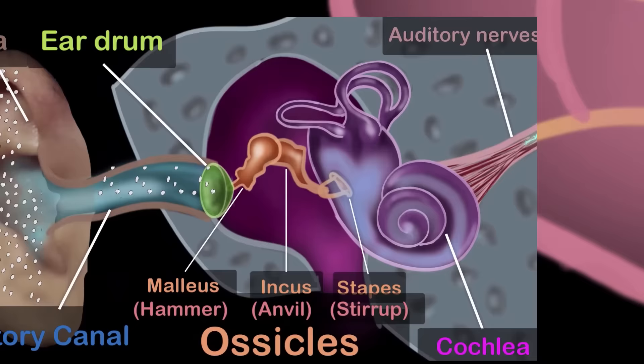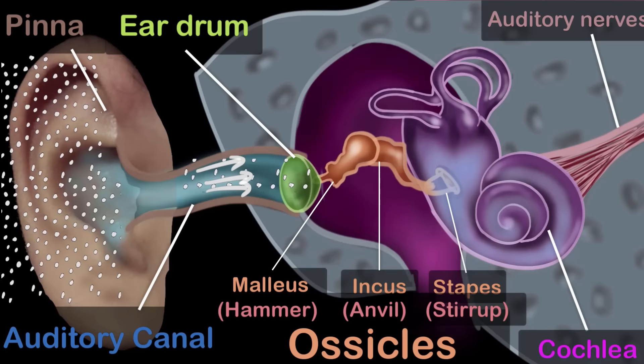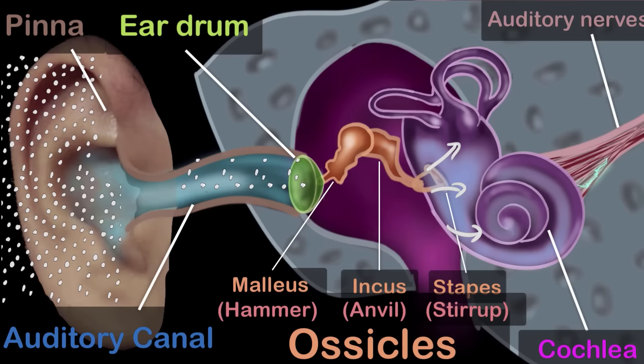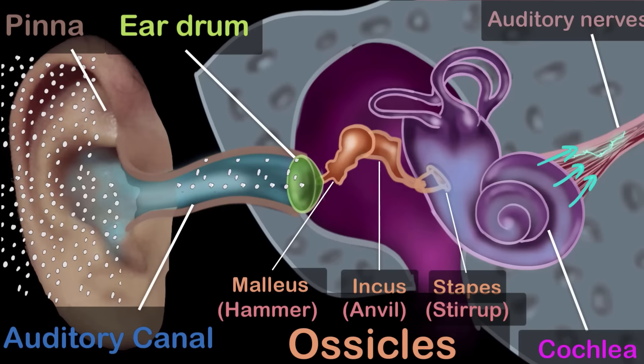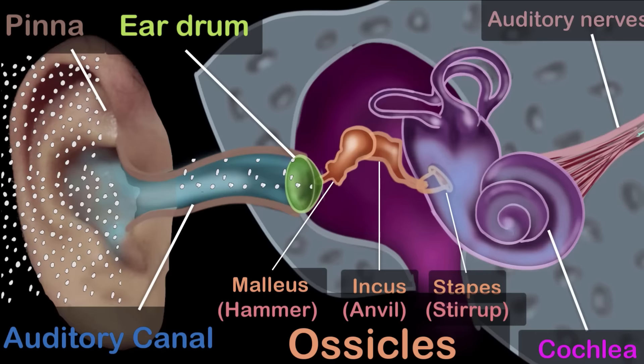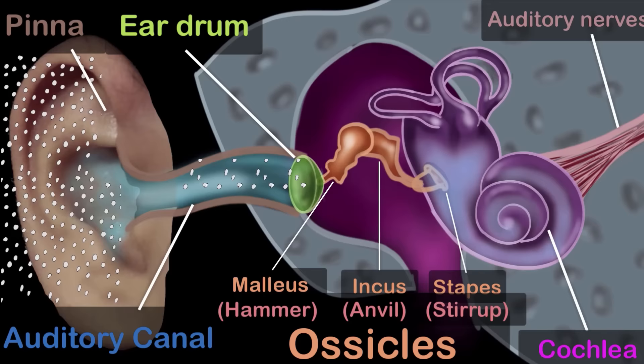To summarize: the outer ear collects sound waves through the pinna and directs them to the eardrum. The three ossicle bones of the middle ear amplify these sound waves and transfer them into the cochlea. The cochlea converts the vibrations into electrical signals and sends them to our brain. And regardless of how many words we use to describe this, the very fact that the back-and-forth movement of air can be converted into this amazing experience we call sound is truly unfathomable and beyond words.